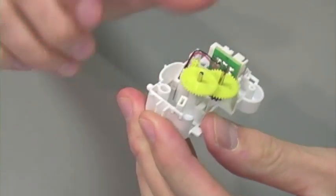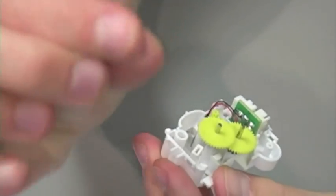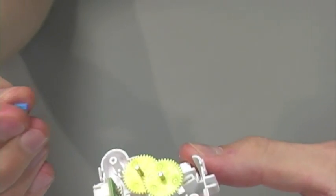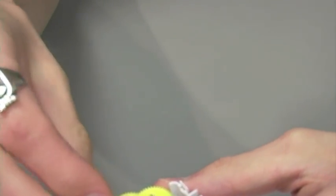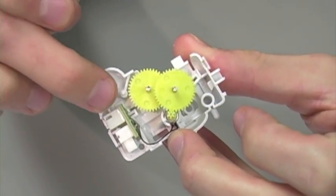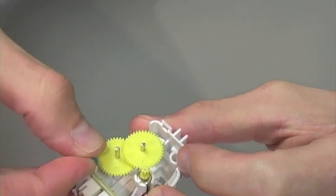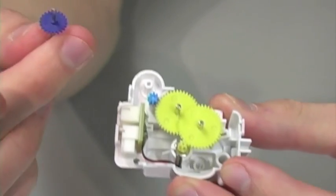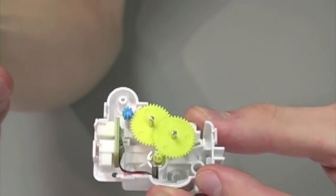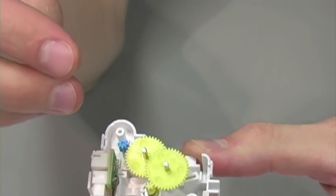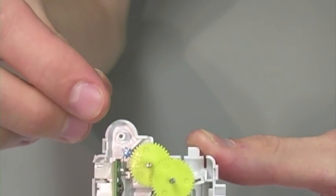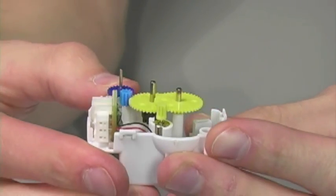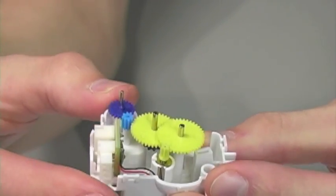Now for step 5 we're going to take part P2 which is a very small blue gear. And we're going to place that on this small plastic peg so that it makes contact with the closest yellow gear. Now we're going to take part P4 and slide that into the little opening beside of our blue gear so that it looks like this. Step 5 complete.